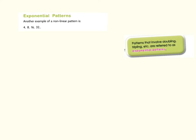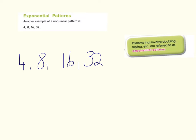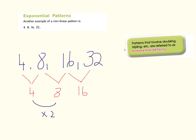So we've had linear and quadratic. There is another pattern that emerges, called the exponential pattern. Consider the numbers 4, 8, 16, 32. Patterns that involve doubling, tripling, or quadrupling are called exponential. The first differences are 4, 8, and 16 — you can see this is constantly doubling: times 2, times 2. So the next difference would be times 2 again, adding 32, giving a next term of 64.